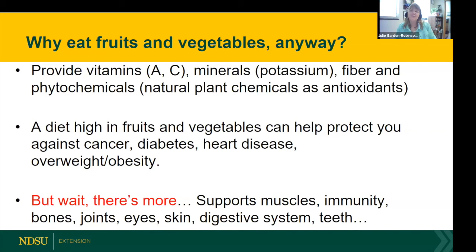Fruits and vegetables also provide fiber and phytochemicals — phyto means plant, so these are natural plant chemicals. Many act as antioxidants — like boxing gloves that fight free radicals which could promote cancer or other diseases. Those colorful fruits and vegetables contain these phytochemicals in abundance. A lot of the current research is focused here. Because of this, eating more fruits and vegetables helps protect against chronic diseases: cancer, diabetes, heart disease, and obesity.